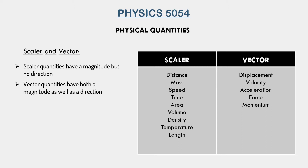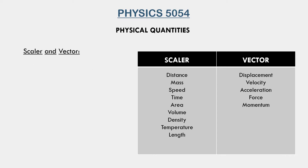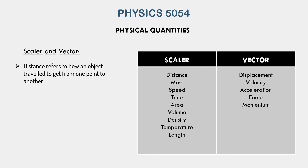Notice, however, that while distance is a scalar quantity, displacement happens to be a vector. So what exactly is the difference? Distance is how much an object actually travels to get from one point to another — it depends on the route we take.